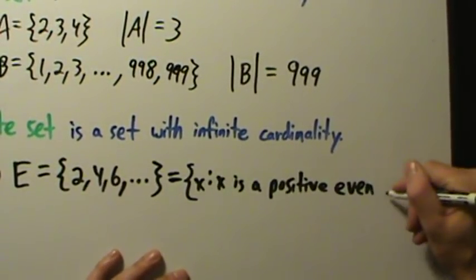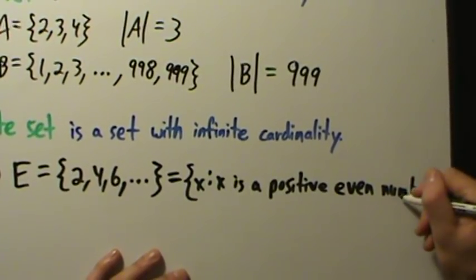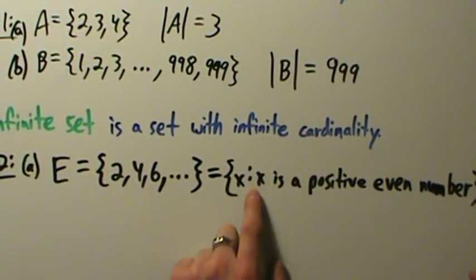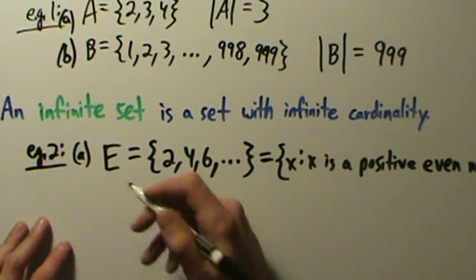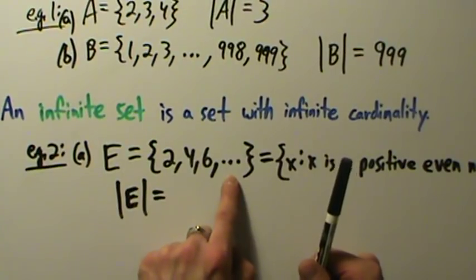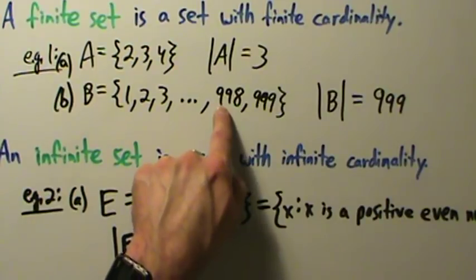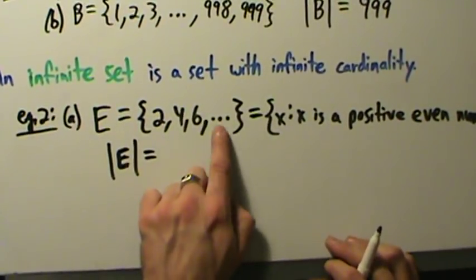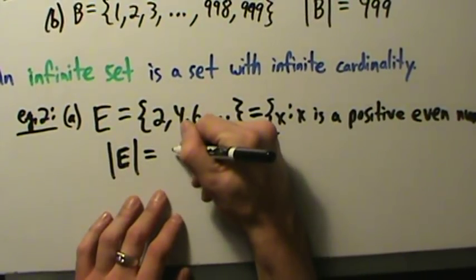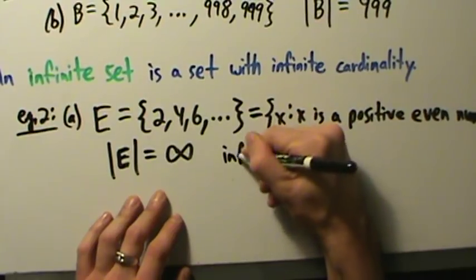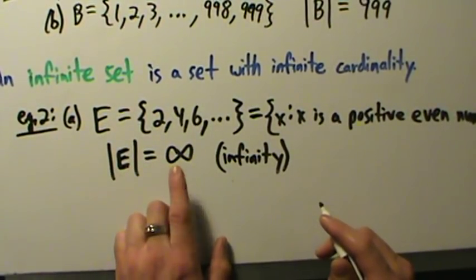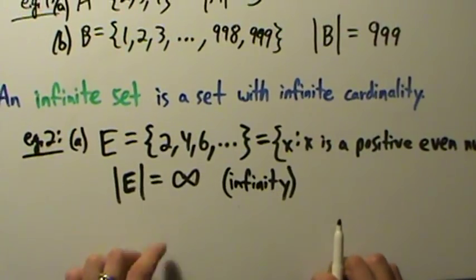So what's the cardinality of E? It's infinite — there are infinitely many positive even numbers. The dot-dot-dot here means we just keep going forever with no stopping point listed. So the cardinality of E is infinity, denoted with the infinity symbol — kind of like an 8 that fell over on its side. So E is an example of an infinite set.